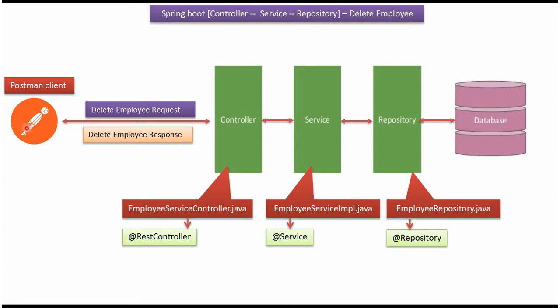Here you can see the Postman client which sends a delete employee request to the controller, then the request goes to the service layer, then to the repository layer, which deletes the employee record from the employee table in the database. Finally, the delete employee response goes back to the Postman client.